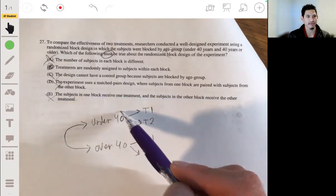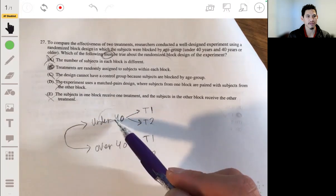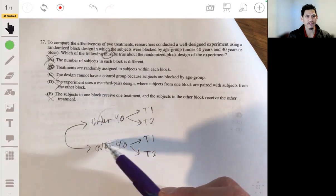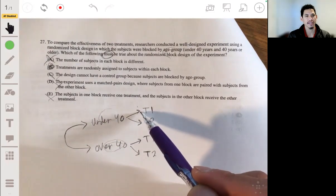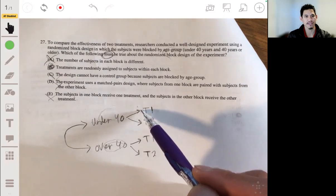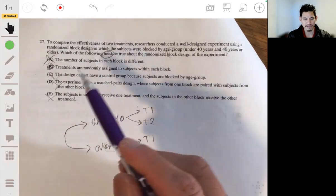And so it's not going to be E. It's not going to be that this group is not just going to receive one treatment and the other group receive the other treatment. Again, within each block, you're going to make sure that each group gets randomly assigned treatment. So the answer is definitely B.